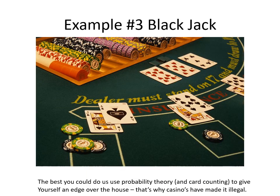A great example of an indeterminate system is gambling — in this case, blackjack. Because we don't have any foreknowledge of the order of the cards in the deck, the best we can use is probability, statistics, and card counting to try to optimize our bets and have an edge over the house. Of course, if the casino finds out you're card counting, they'll take action because card counting is illegal. Because we have no knowledge of the card order after shuffling, we do not have a deterministic system.